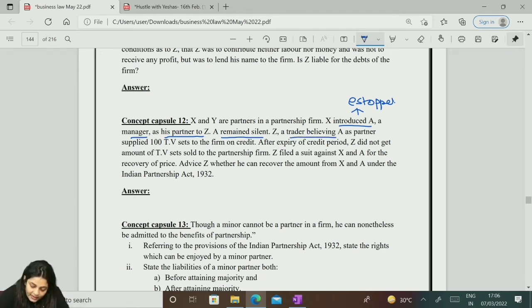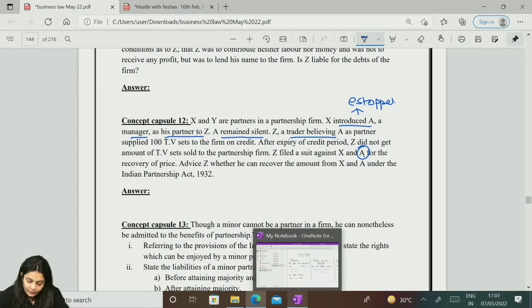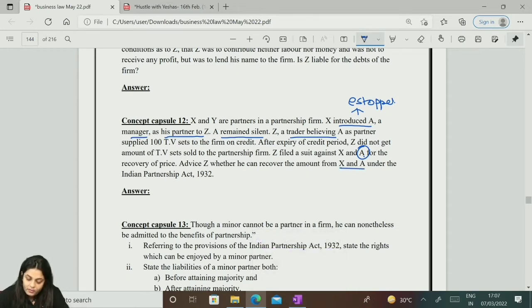Z, a trader, believing A as a partner, supplied 100 TV sets to the firm on credit. After expiry of credit period, Z did not get the amount of the TV sets sold to the partnership firm. Z filed a suit against X and A for the recovery of the price. Advised Z whether he can recover the amount from X and A. This is partner by estoppel and in case of partner by estoppel or holding out, that partner has severe liability.